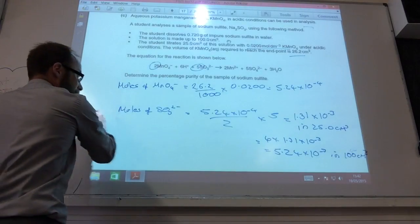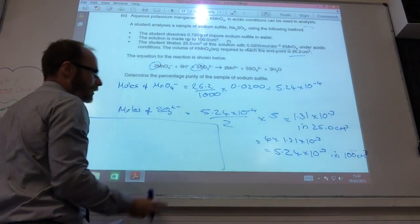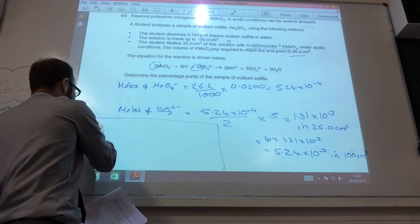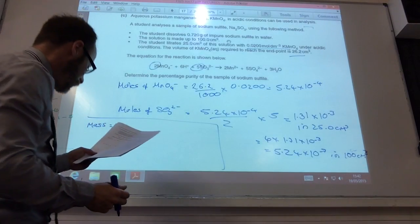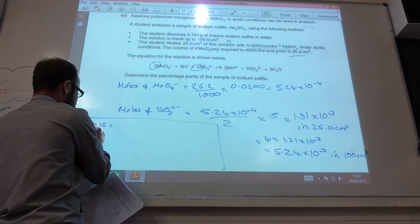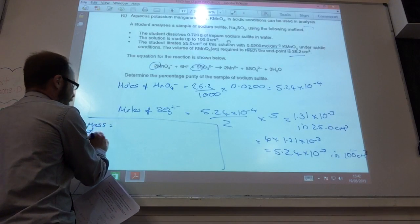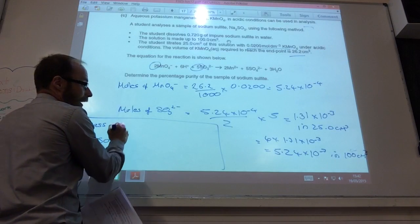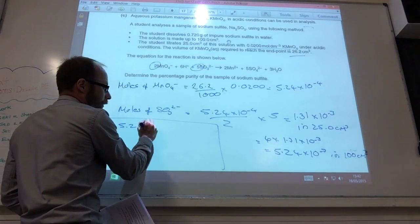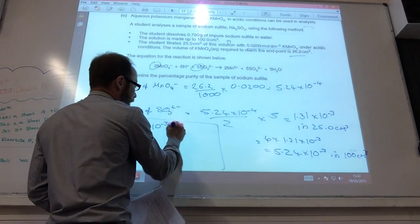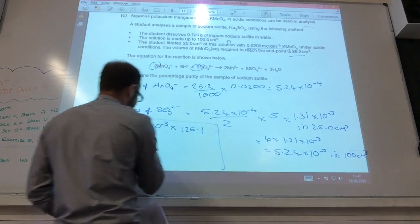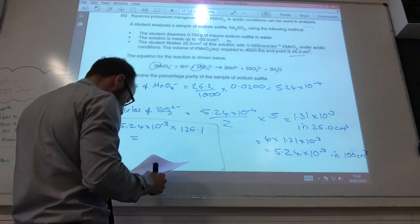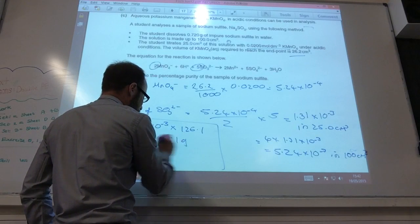And then it's just pretty easy. All you've got to do, that's giving you the moles, you've got to convert that into a mass. To do that, you just times by the molar mass of sodium sulfite. So the mass of Na2SO3 is going to equal 5.24 times 10 to the minus 3 times the molar mass of sodium sulfite, which is 126.1. That gives me 0.661 grams.